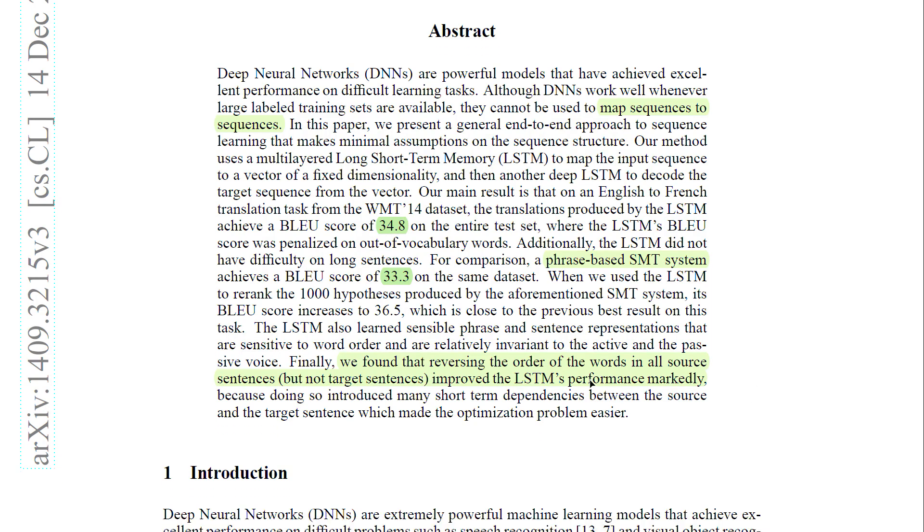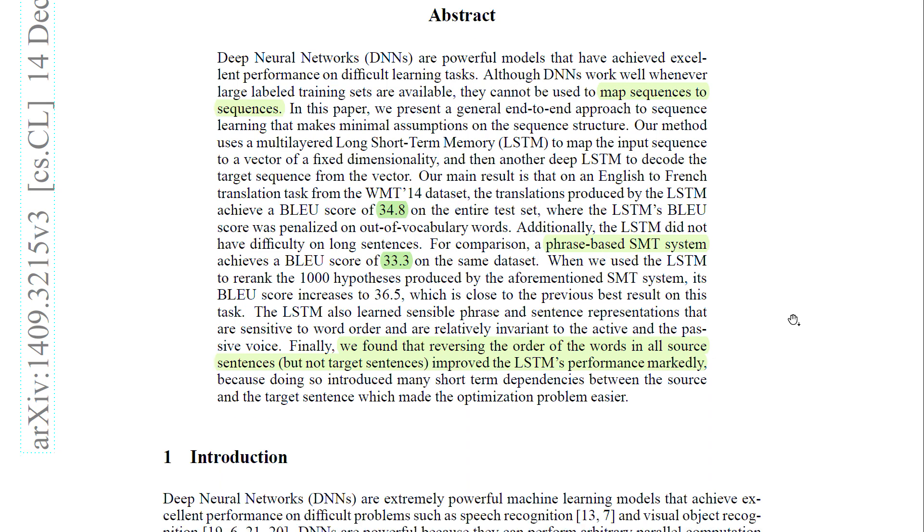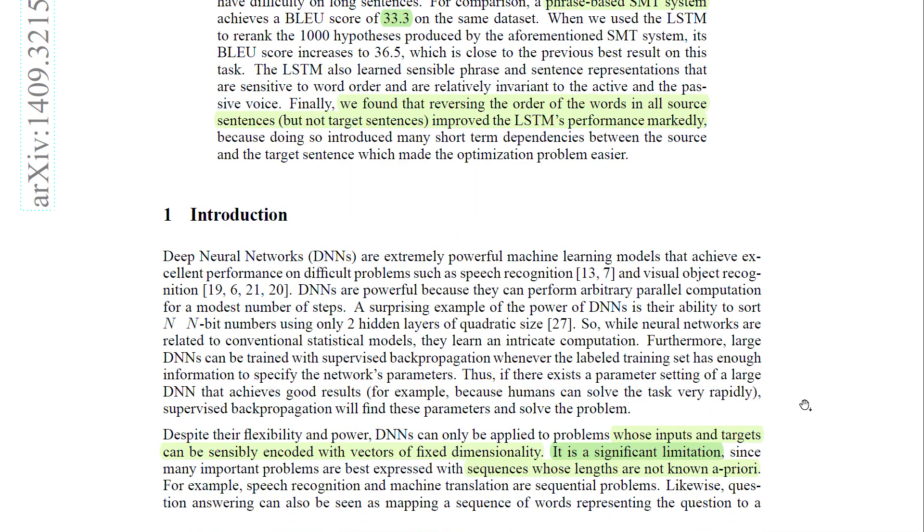They also found that reversing the order of the words in the source sentences, but not the target sentences, improved the LSTM's performance. So I guess they just reversed the sentence of the English sentence. So reading other papers that were released after this one, they didn't really use this anymore. I think this was just specific for this paper. So I'm not really going to put that much focus on reversing the sentences as it doesn't seem to be a strategy that continues with the newer papers.